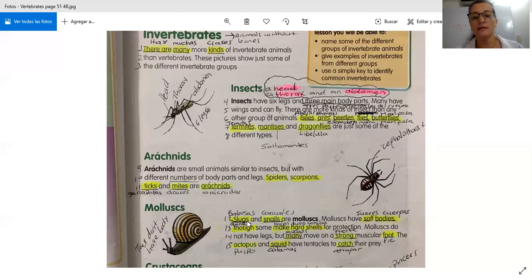Molluscs. Slugs and snails are molluscs. Molluscs have soft bodies, though some make hard shells for protection. Molluscs do not have legs, but many move on a strong muscular foot. The octopus and the squid have tentacles to catch their prey. Okay. Los moluscos, como las babosas y los caracoles, son moluscos. Los moluscos tienen cuerpos suaves, aunque algunos hacen una concha dura para protegerse. Concha dura para protegerse. No tienen huesitos ni huesos.